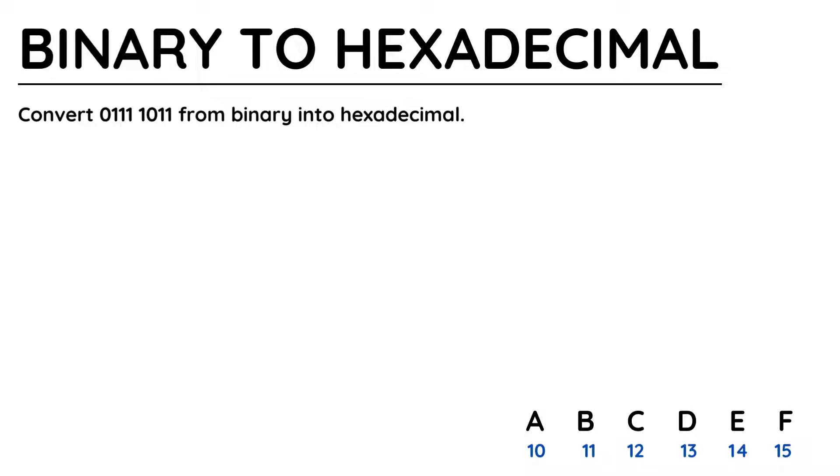Each character in hexadecimal is represented in 4 bits, so looking at this question, 0111 will be represented as one character, and 1011 as another.